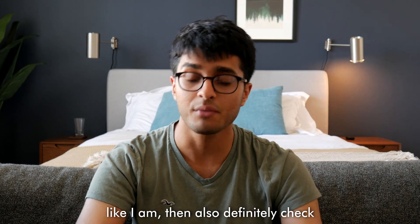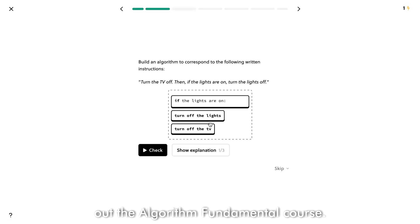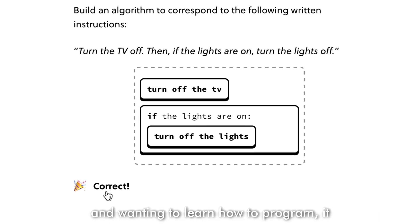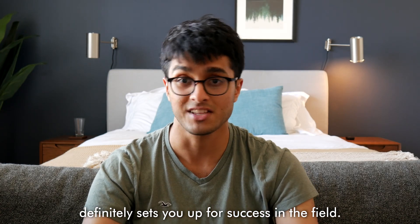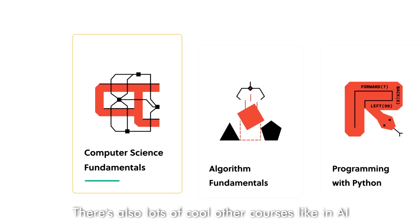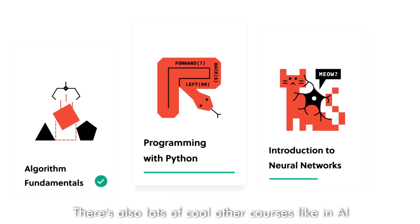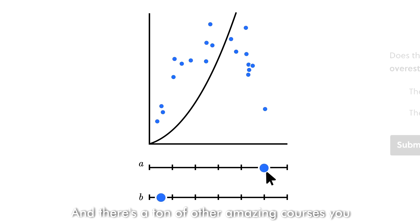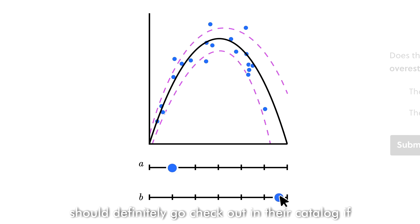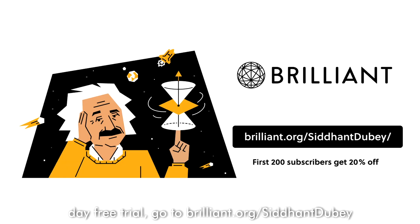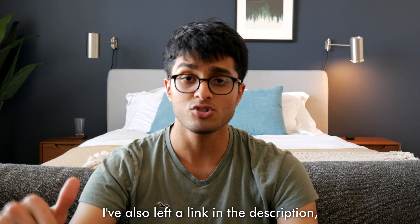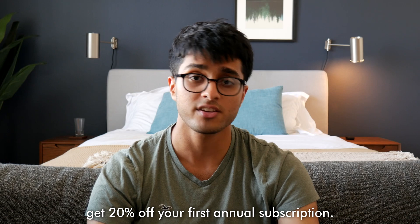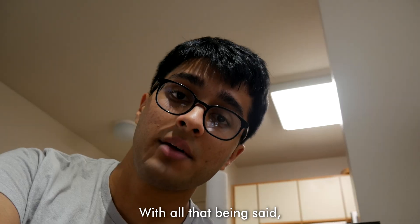If you're interested in computer science, definitely check out the Algorithm Fundamentals course — it's great if you want to learn how to program and sets you up for success. There's also courses on AI, reinforcement learning, and neural networks, plus tons of other amazing courses in their catalog. If you want to try it out, go to brilliant.org/sitandebate for a 30-day free trial, and the first 200 of you to click the link will get 20% off your first annual subscription.